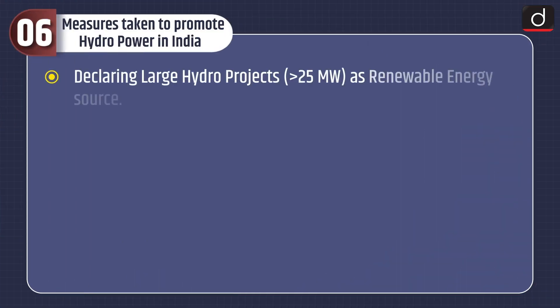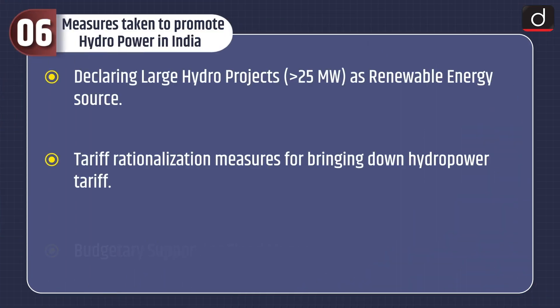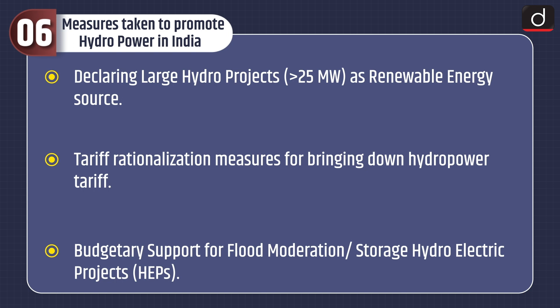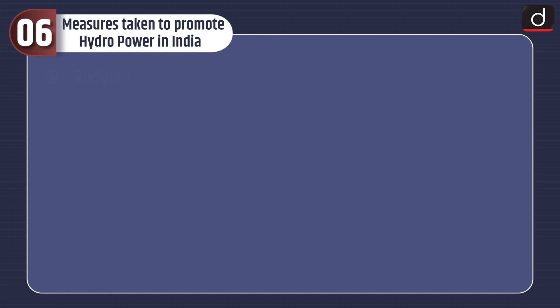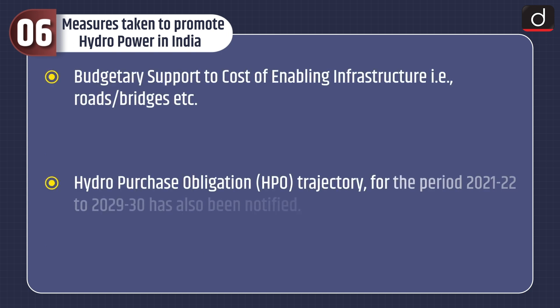Measures taken to promote hydropower in India include: declaring large hydro projects as a renewable energy source; tariff rationalization measures for bringing down hydropower tariff; budgetary support for flood moderation or storage hydroelectric projects; budgetary support for the cost of enabling infrastructure such as roads and bridges; and a Hydro Purchase Obligation (HPO) trajectory for the period 2021-22 to 2029-30 has also been notified.